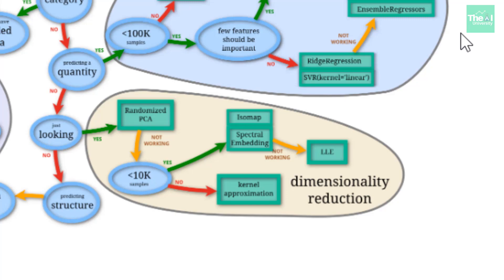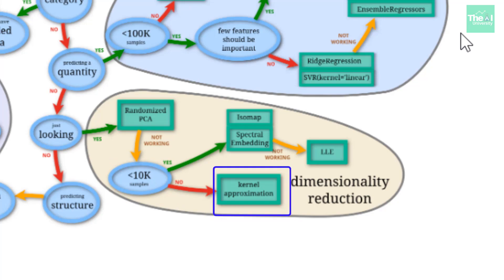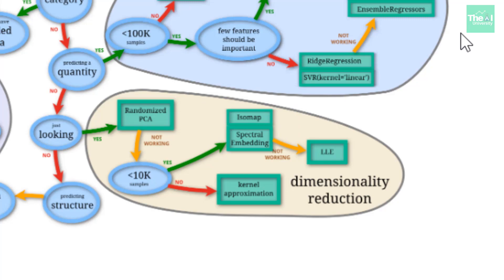Here we pick randomized PCA — principal component analysis. If this algorithm doesn't give the right results, we check if the number of samples are less than 10,000. If not, we pick the kernel approximation algorithm. Otherwise, we can opt for isomap or spectral embedding. If neither of those works, we pick LLE — local linear embedding.